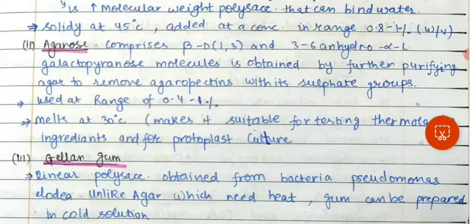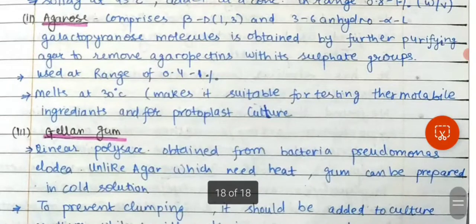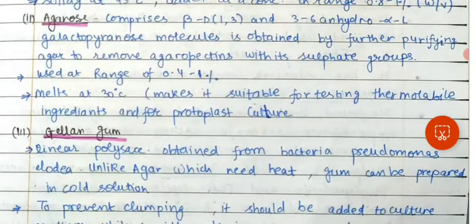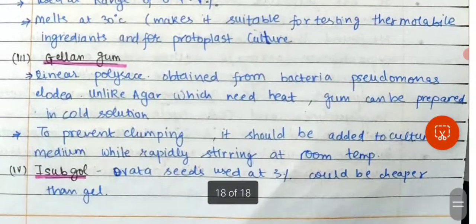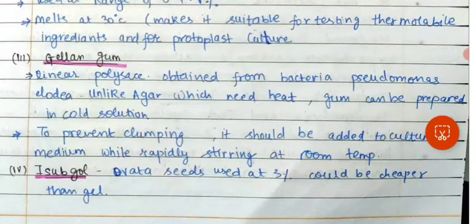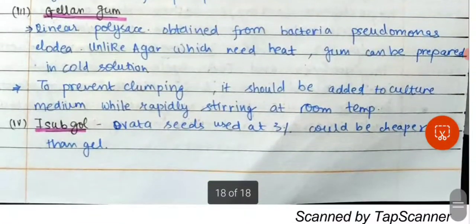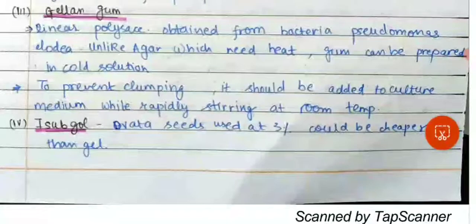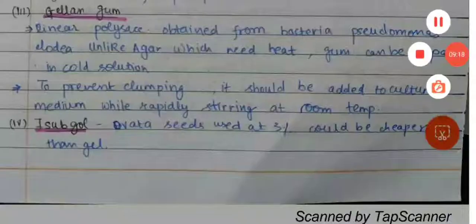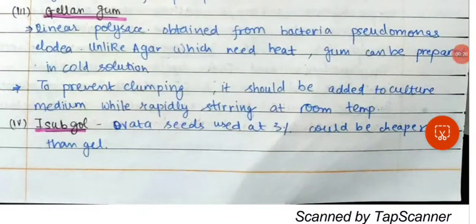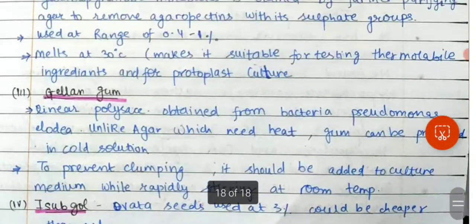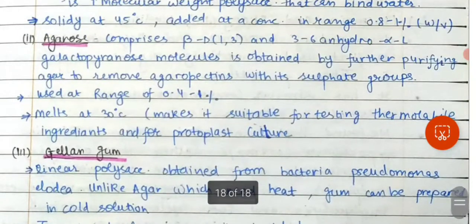Agarose can also be used at 0.4 to 1%; it melts at 30°C, which makes it suitable for testing ingredients and for protoplast culture. Gellan gum is a linear polysaccharide obtained from the bacterium Pseudomonas. Unlike agar which requires heat, gellan gum can be prepared in cold solution as well. To prevent clumping, it should be added to the culture medium while rapidly stirring at room temperature. Psyllium (Plantago ovata) seeds used at 3% could be cheaper than gel as a solidifying or gelling agent.